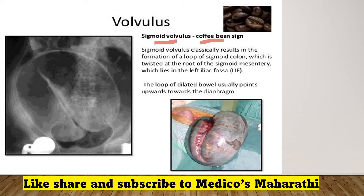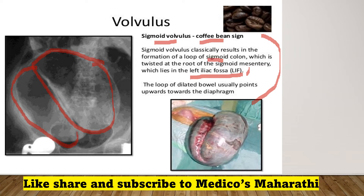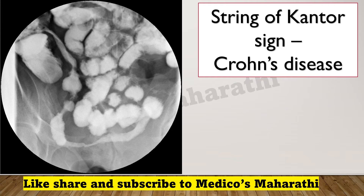Sigmoid volvulus results in formation of a loop of sigmoid colon which is twisted at the root of sigmoid mesentery, which lies in the left iliac fossa. You can pause the video and read this paragraph clearly. Here is the radiologic image clearly showing the coffee bean sign. Next is string of contour — it is the sign of Crohn's disease. You can see this string, which is named string of contour.